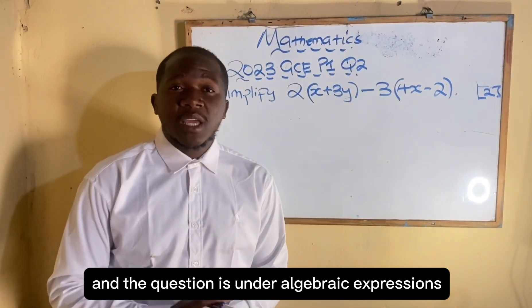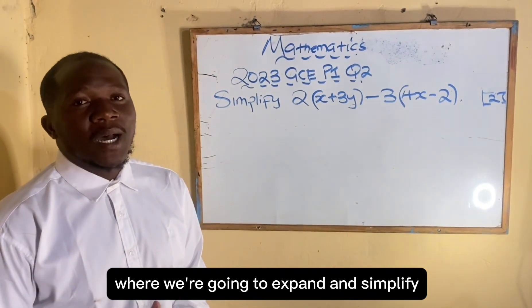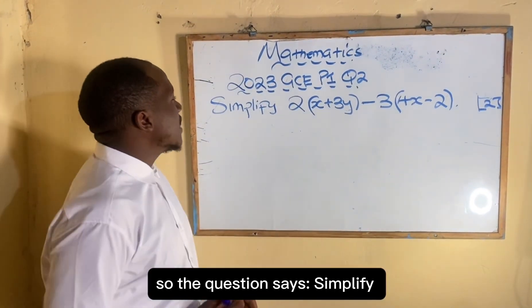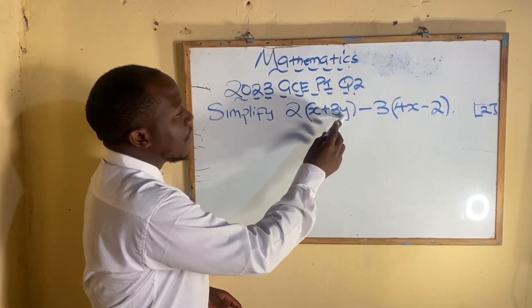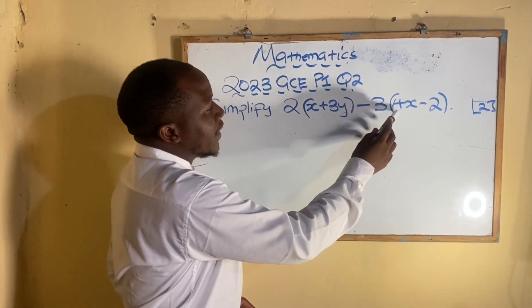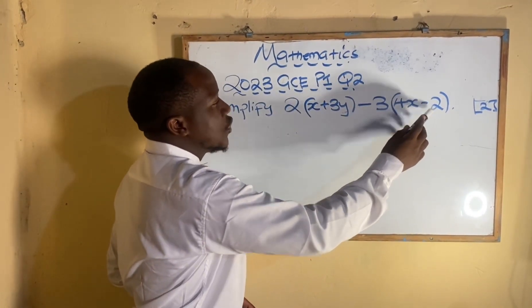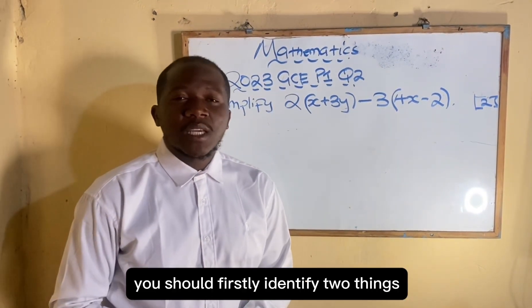The question is under algebraic expressions where we're going to expand and simplify. The question says simplify 2(x+3y)-3(4x-2). When taught to simplify you should firstly identify two things.